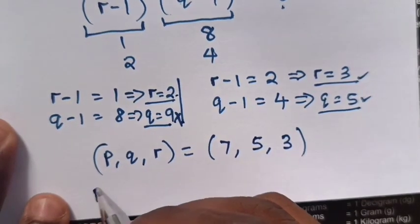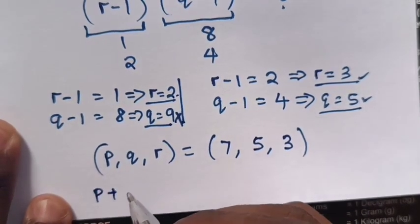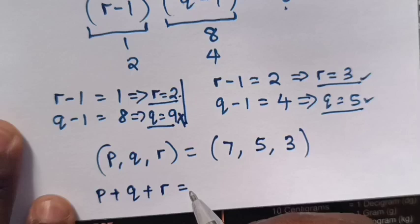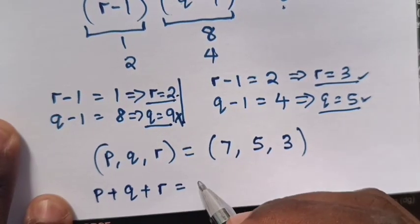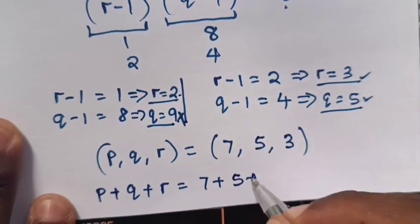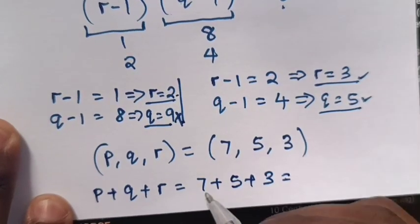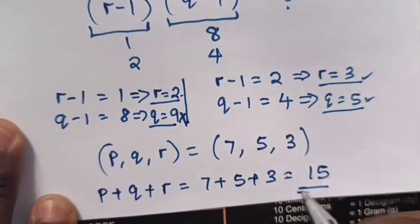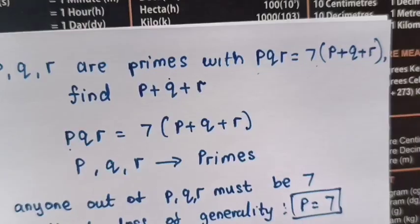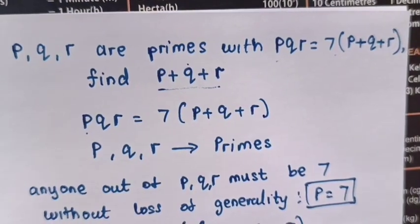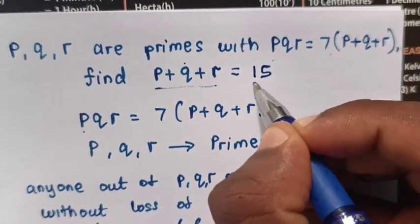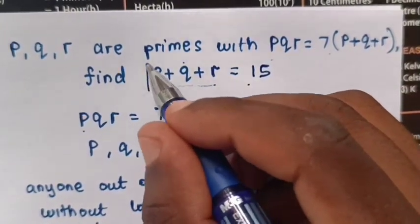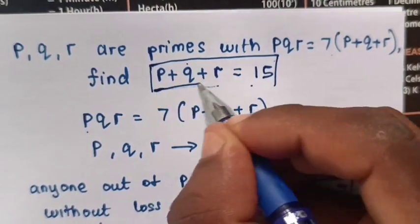But we are asked to find value of P plus Q plus R. So it will be equals to 7 plus 5 plus 3 equals 15. So the value of P plus Q plus R is 15. Don't forget to subscribe to my channel. See you in the next video. Bye-bye.